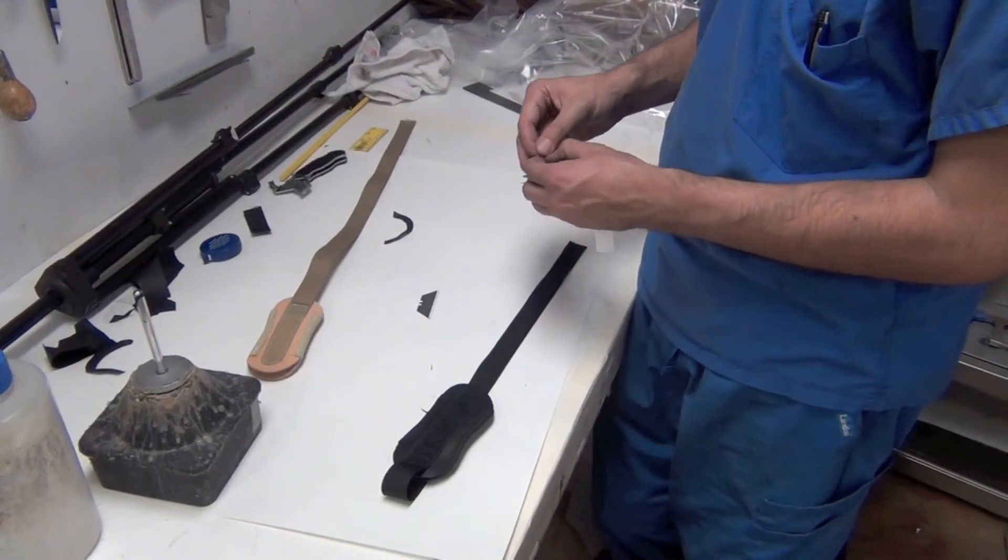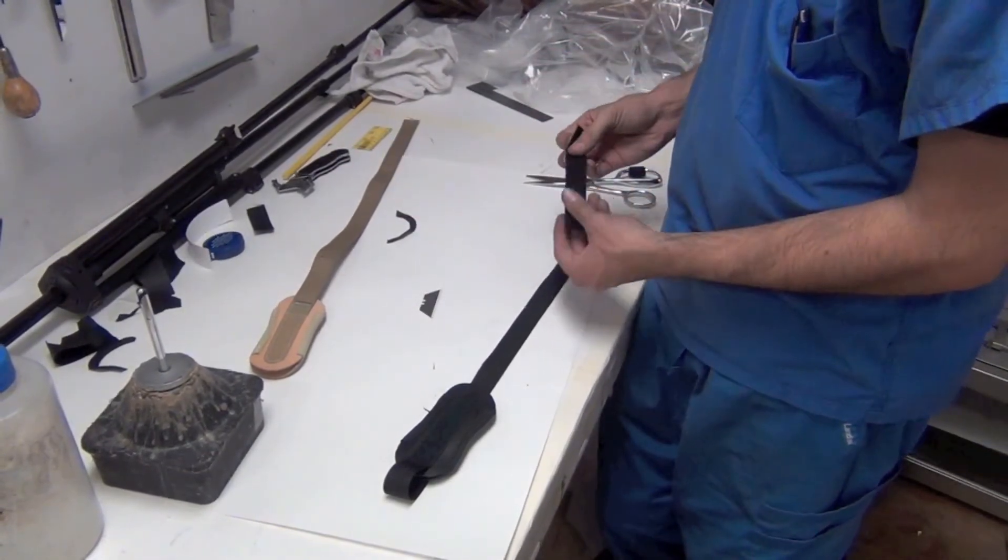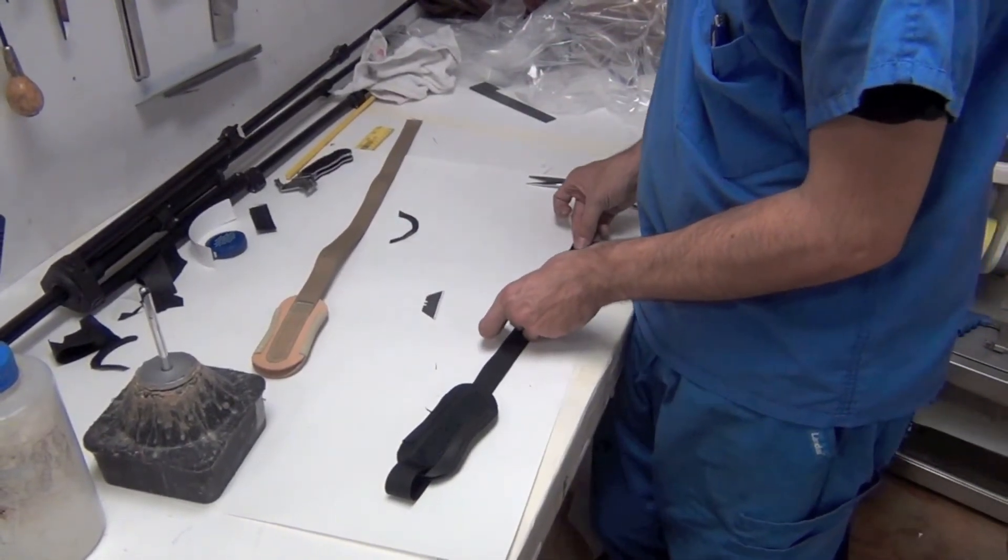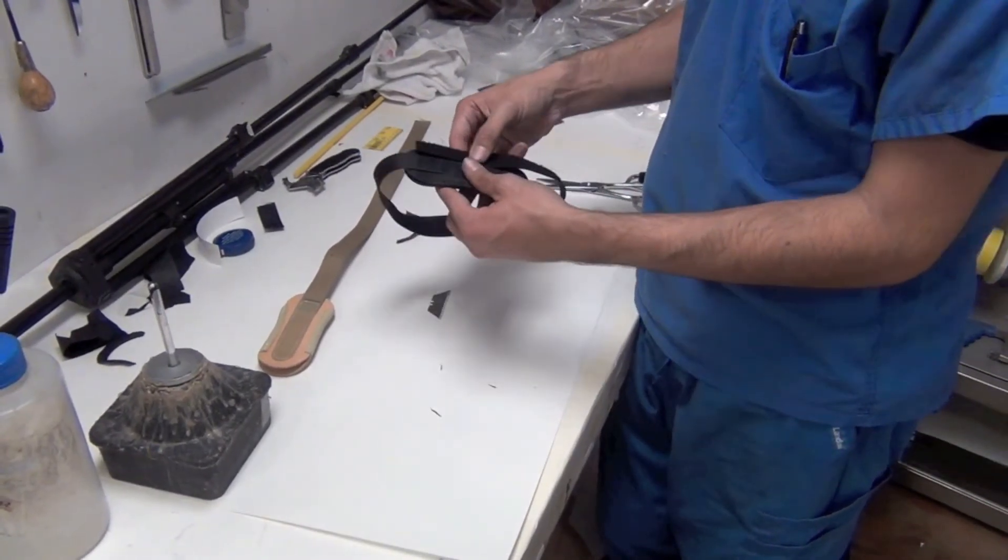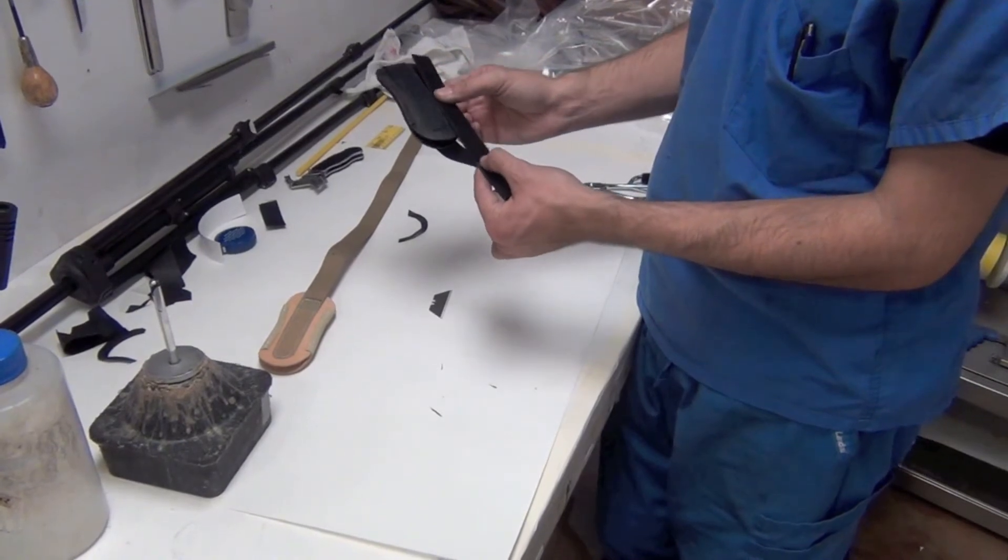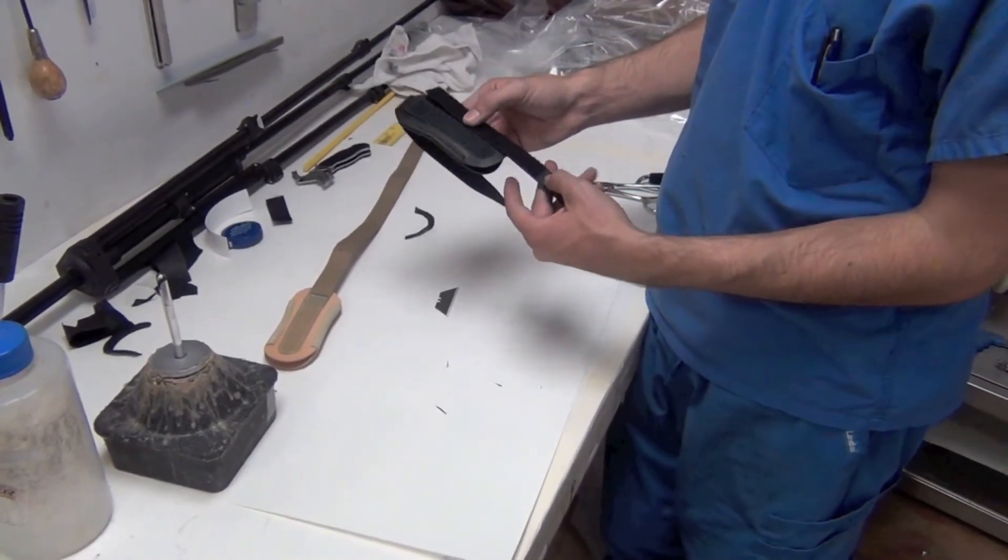And then add some loop to the closure system. And I always want to make my loop extra long. As you can see here, it's about an inch and a half longer than the hook is.